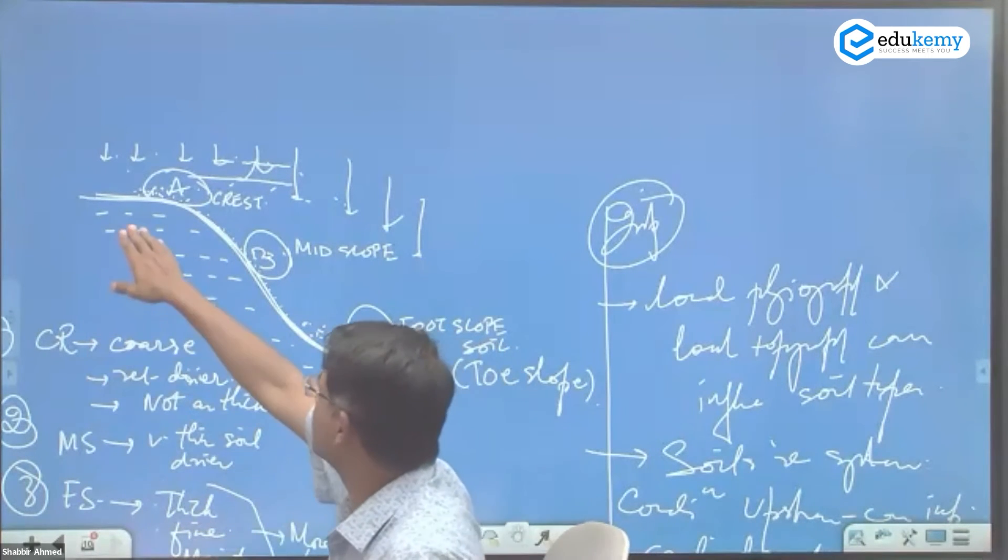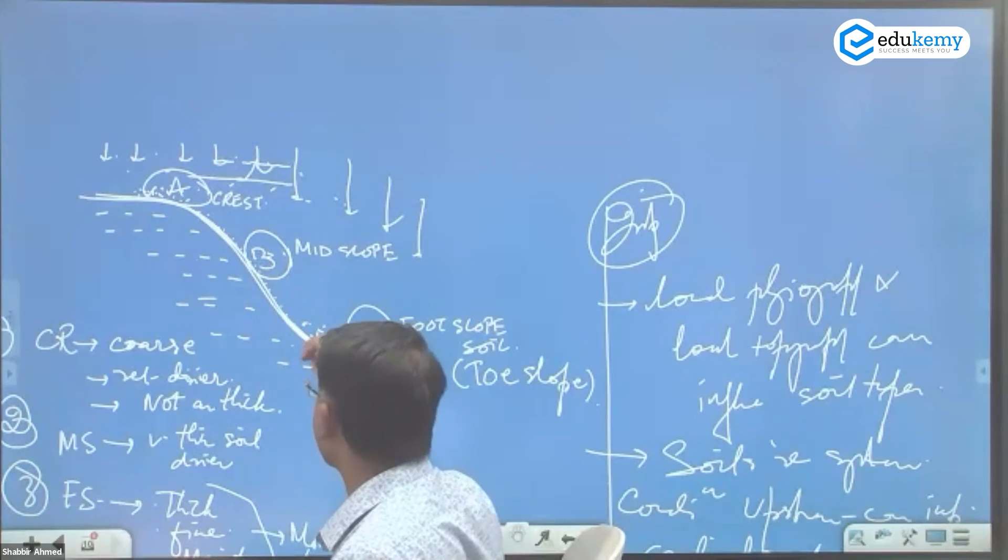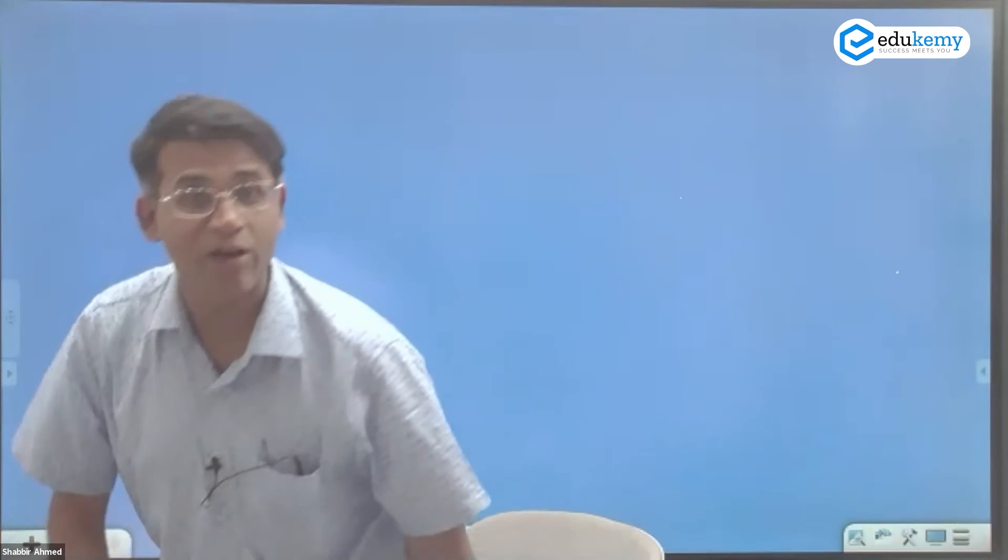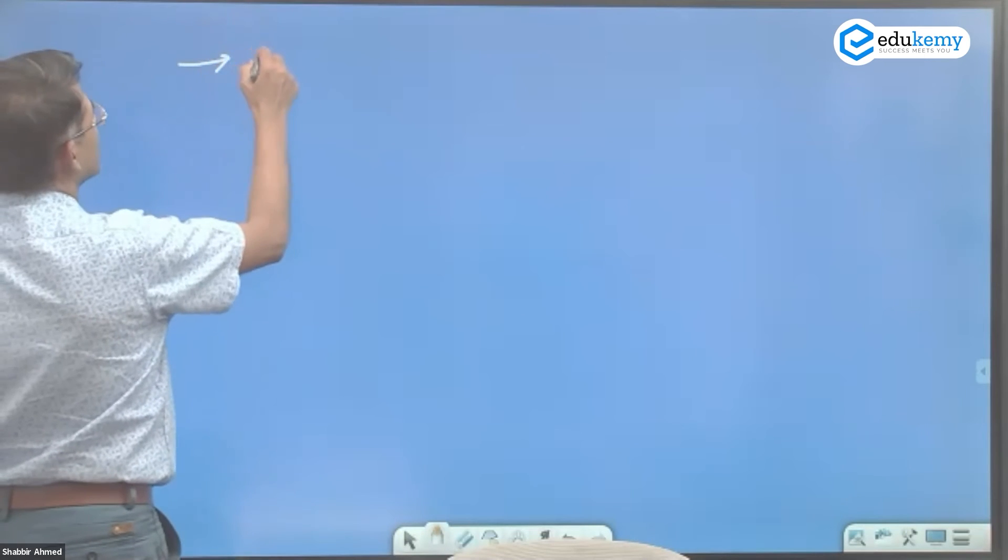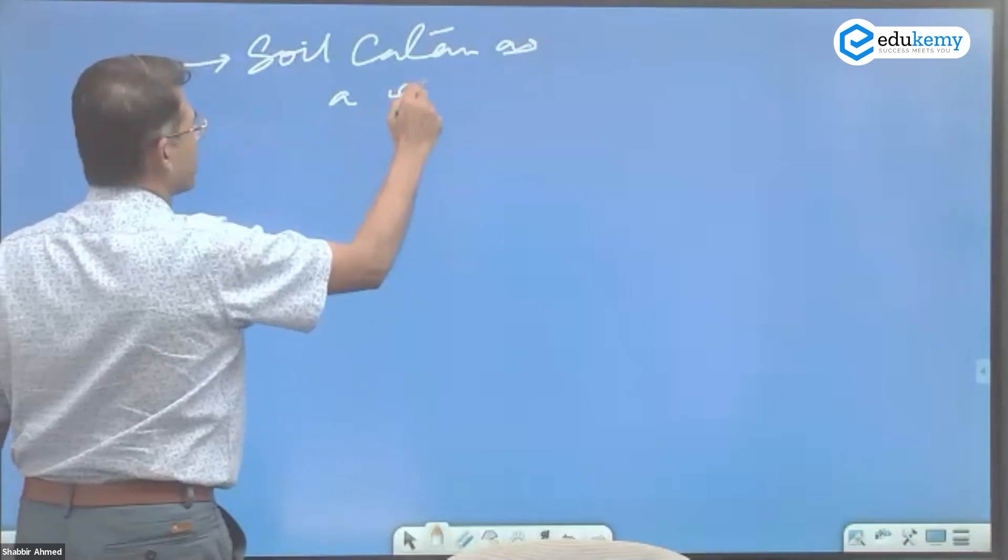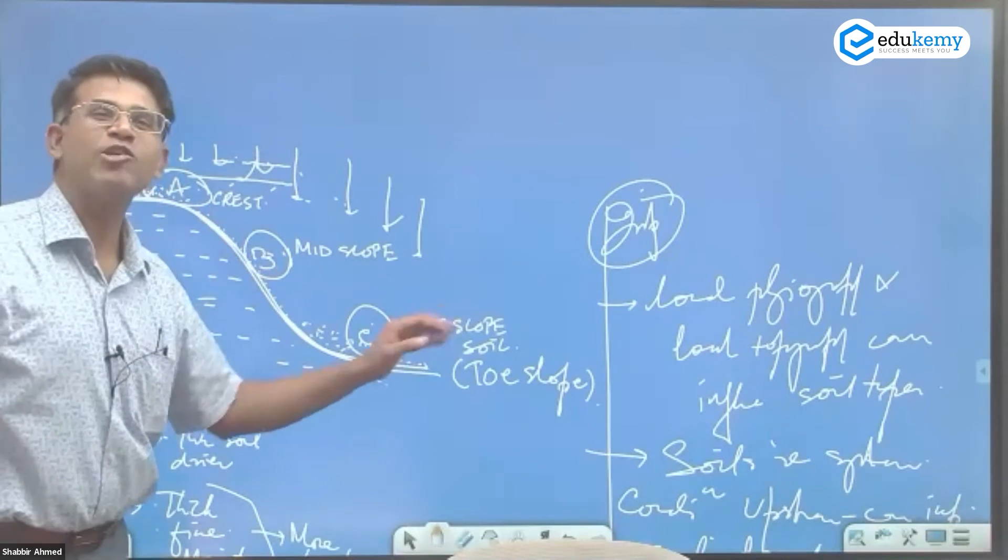But because of difference of the slope conditions, because of difference of the elevations, we have got three different types of soils. The crest soil, the mid-slope soil and the foot soil. Where all will use this? Now you will use this. You can discuss soil catena as an example.